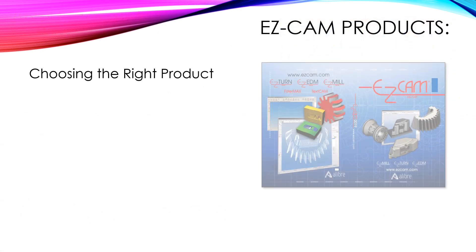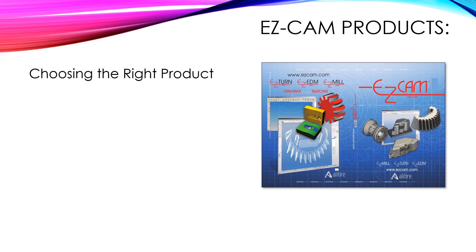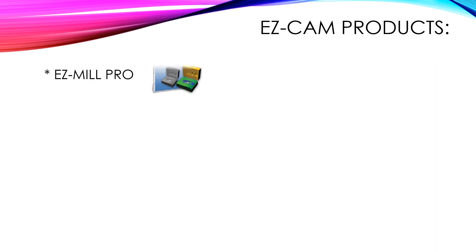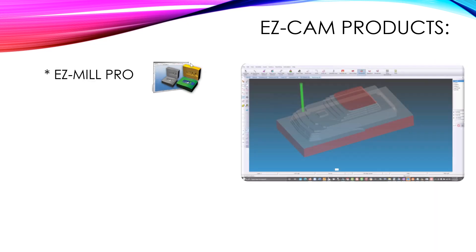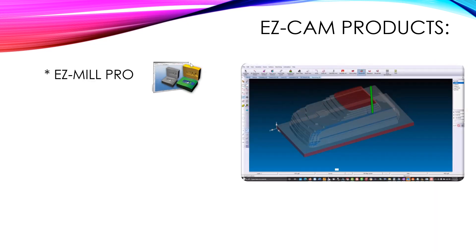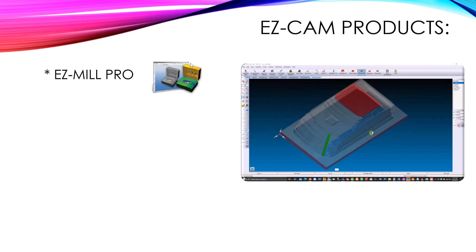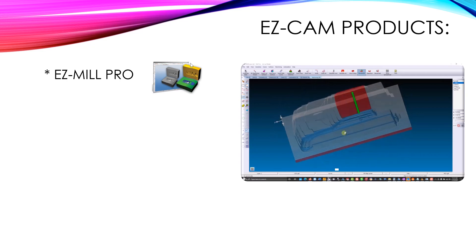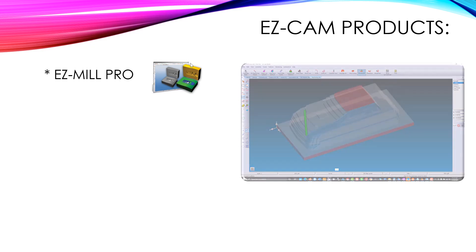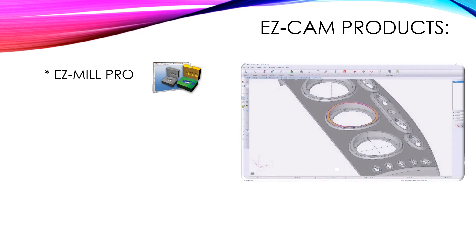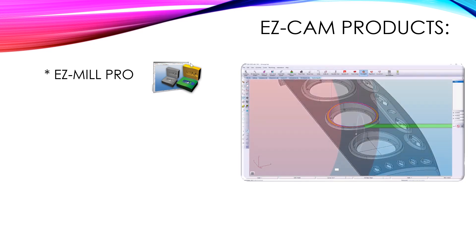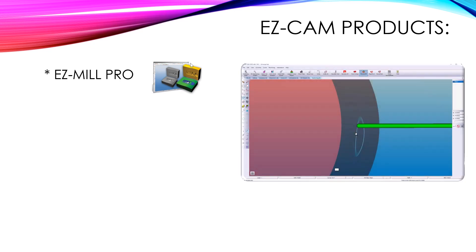Here is an overview of our products and what they have to offer. EasyMill Pro is our most advanced product, offering 2–4 axis simultaneous programming and 5-axis indexing. There are over 14 3D toolpaths available.